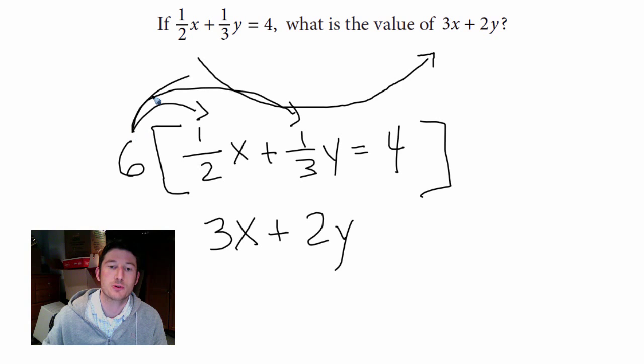And last, don't forget to multiply this 6 into the 4, so we get 24. So it turns out that 3x + 2y equals 24.